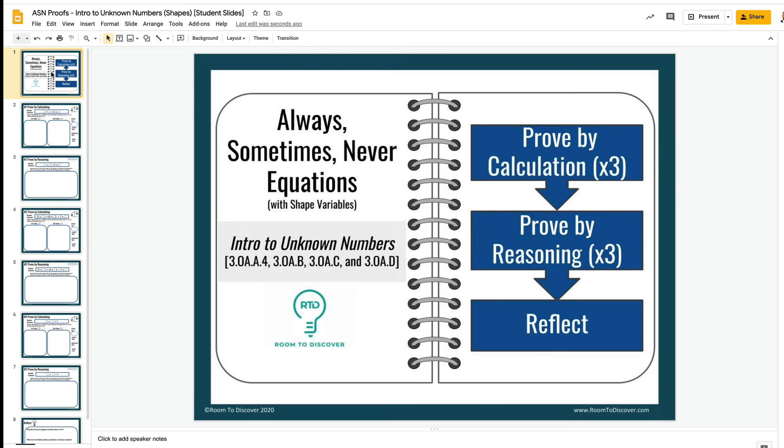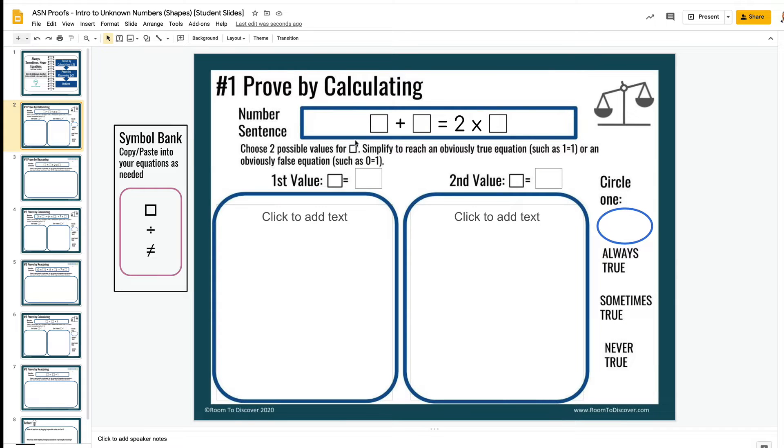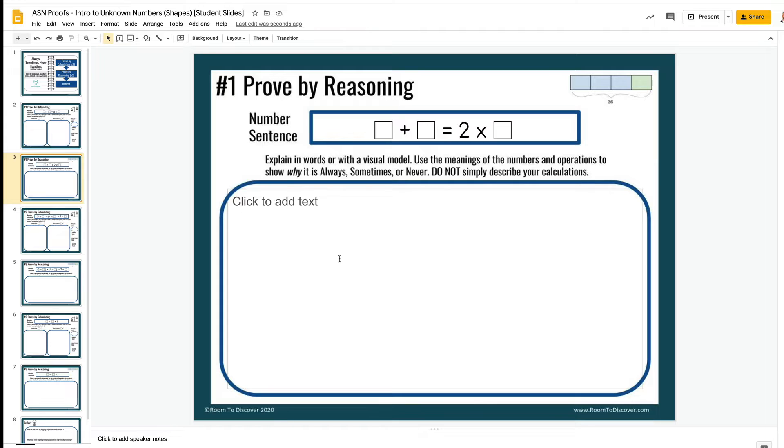This first activity we'll take a look at is always, sometimes, never equations. The idea here is that we give students an equation. In this case, it has box as a variable, but there's another version where we have x as the variable, depending on how old the students are, and they first need to prove by calculation, and then they need to prove by reasoning.